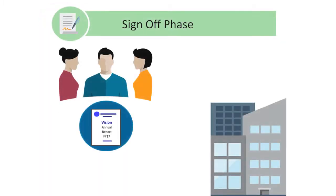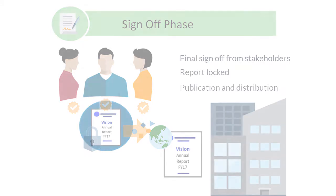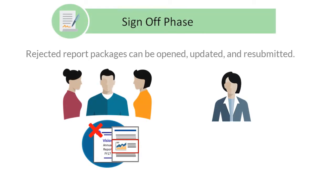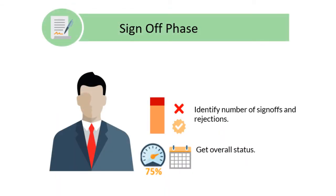In the sign-off phase, you gather final approval from key stakeholders, after which the report is locked and can be published and distributed. If a report is rejected, the owner can reopen it so updates can be made and the content resubmitted. Process reporting enables owners to identify the number of sign-offs and rejections and get an overall status given the due date.